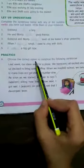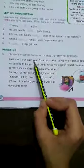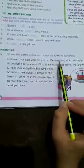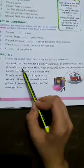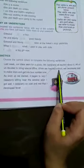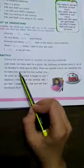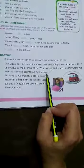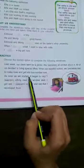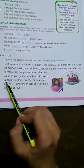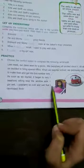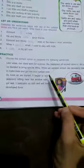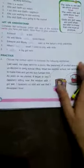Choose the correct option to complete the following sentences. Last week, our class went for a picnic. We were all excited about it. All of us decided to bring special tiffins. When we reached school, we were told to make lines and get into bus number nine. As soon as we started, it began to rain. I was sitting near the window seat. I got wet. I was so cold and wet that I developed fever. Past ki baat ho rahi hai. Har jagah was, were.